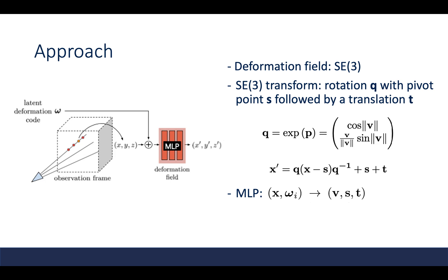The deformation field is modeled by SE(3), which consists of a rotation, a pivot point, followed by a translation. So for each point x, we can map it using the equation shown on the right hand side to the canonical frame coordinates. The multi-layer perceptron network essentially maps the input x and ω_i to v, s, and t.